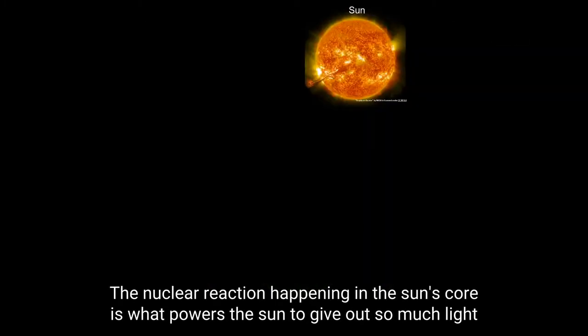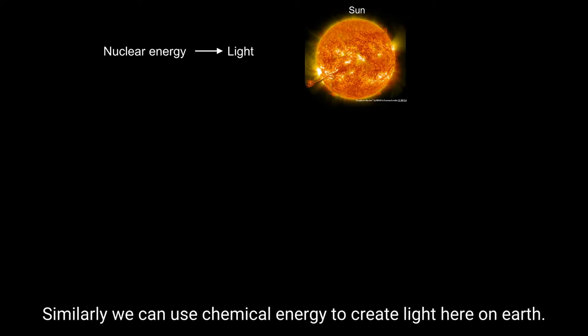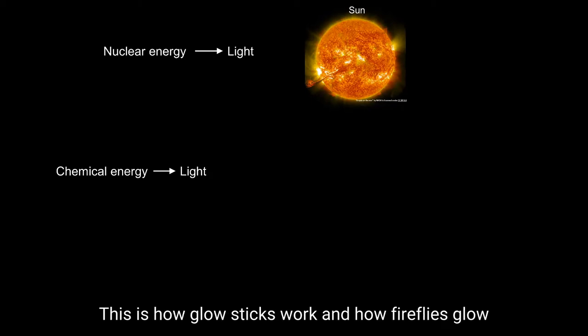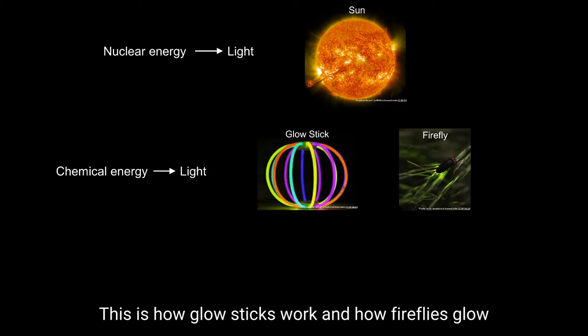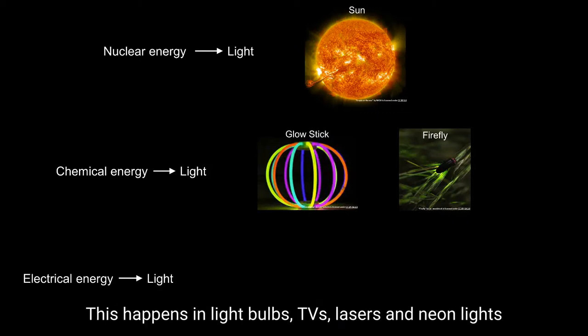The nuclear reaction happening in the Sun's core is what powers the Sun to give out so much light, so ultimately nuclear energy is what creates the sunlight. Similarly, we can use chemical energy to create light here on Earth — this is how glow sticks work and how fireflies glow. We can also use electrical energy to generate light.